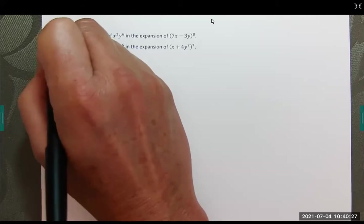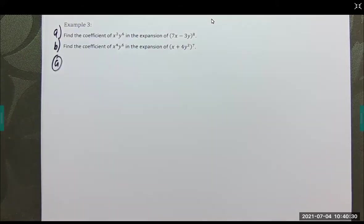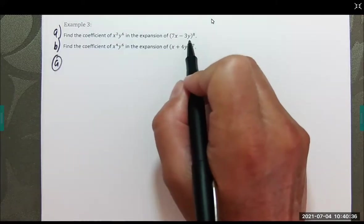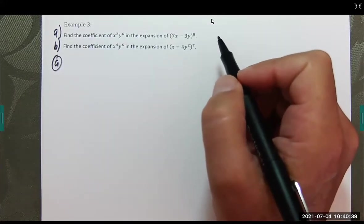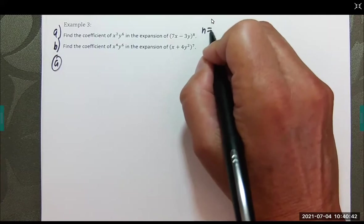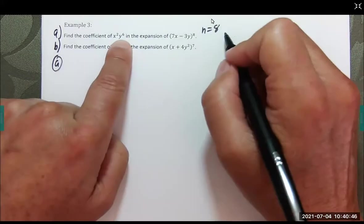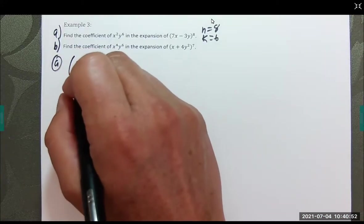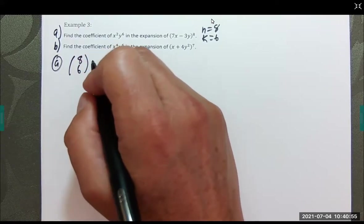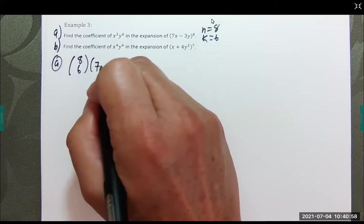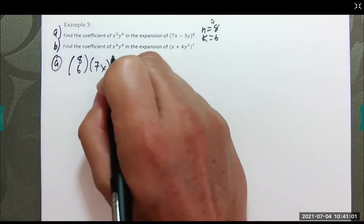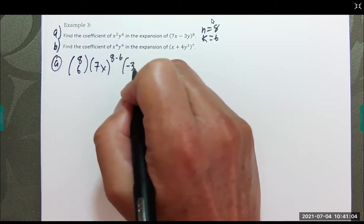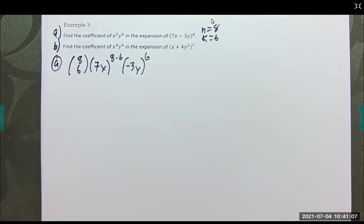So, this would be part a. Find the coefficient of x to the second, y to the sixth. And, we're dealing with this here. Well, what that means is, in this case, n is 8. And, k is 6. So, this is going to be n choose k, which is 8 choose 6. This is going to be 7x to the (8 minus 6) power, and negative 3y to the sixth power. You know, a lot of numbers here. So, let's crank this out.